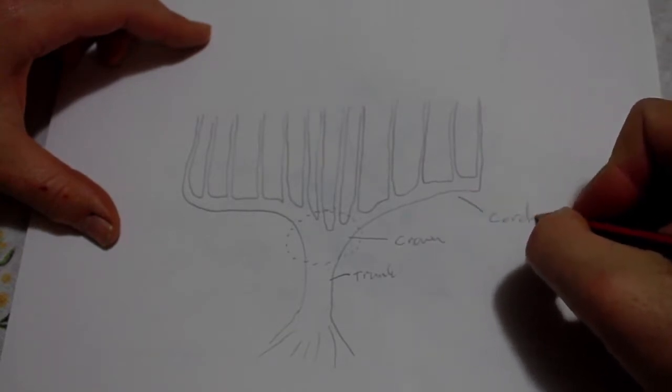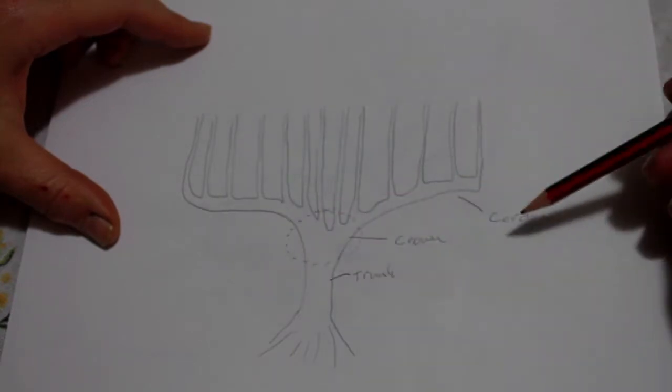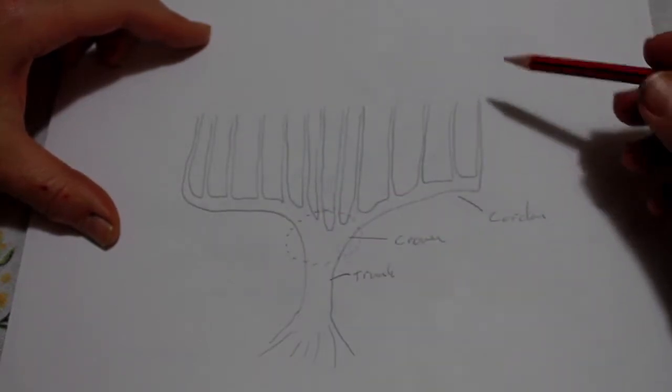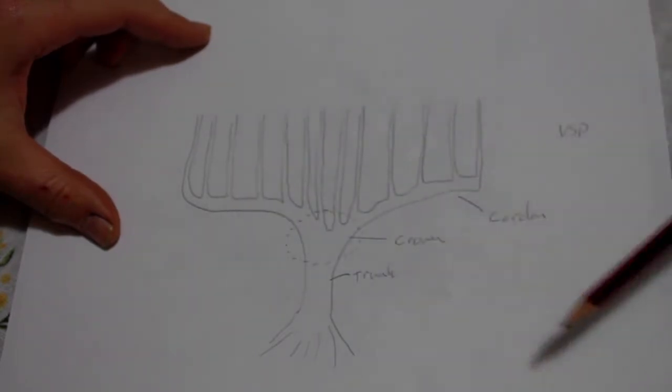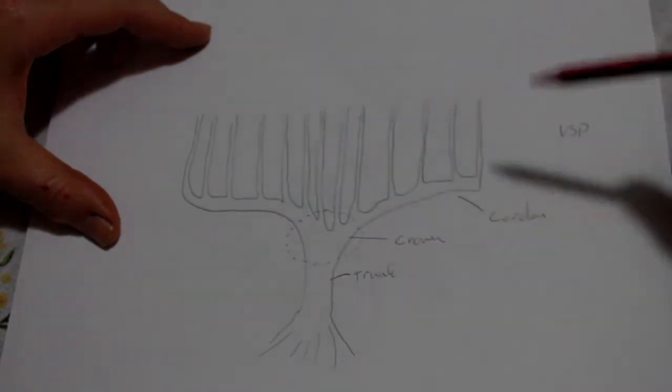Now some pruning systems will have up to four cordon. We have the most common for Australia, which is the vertical shoot positioned, or VSP type arrangement, where we have two cordon, one on each side.